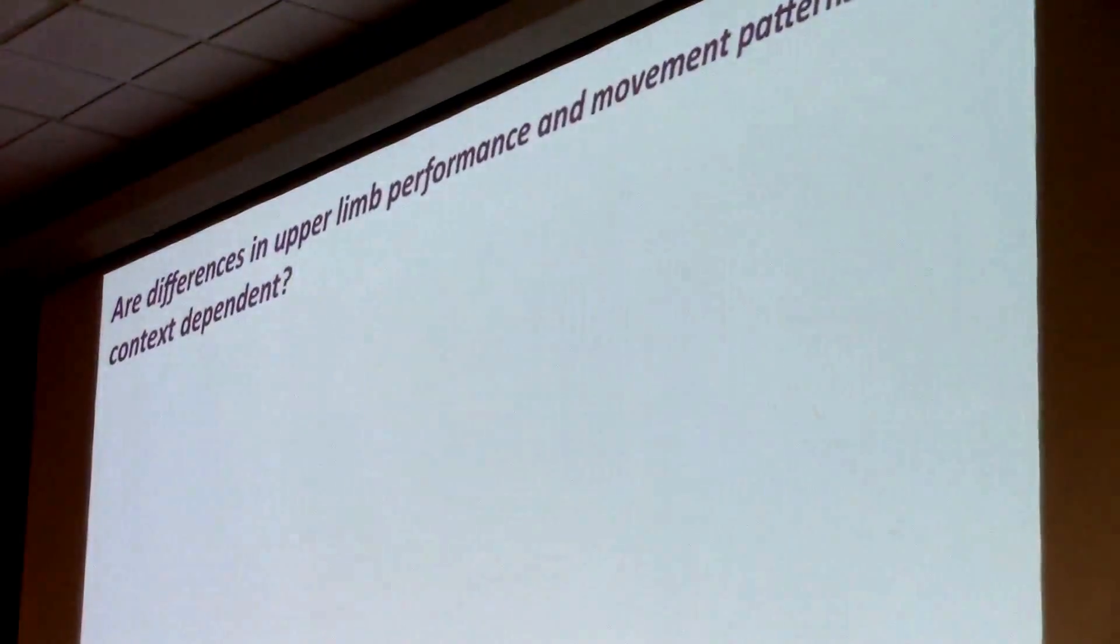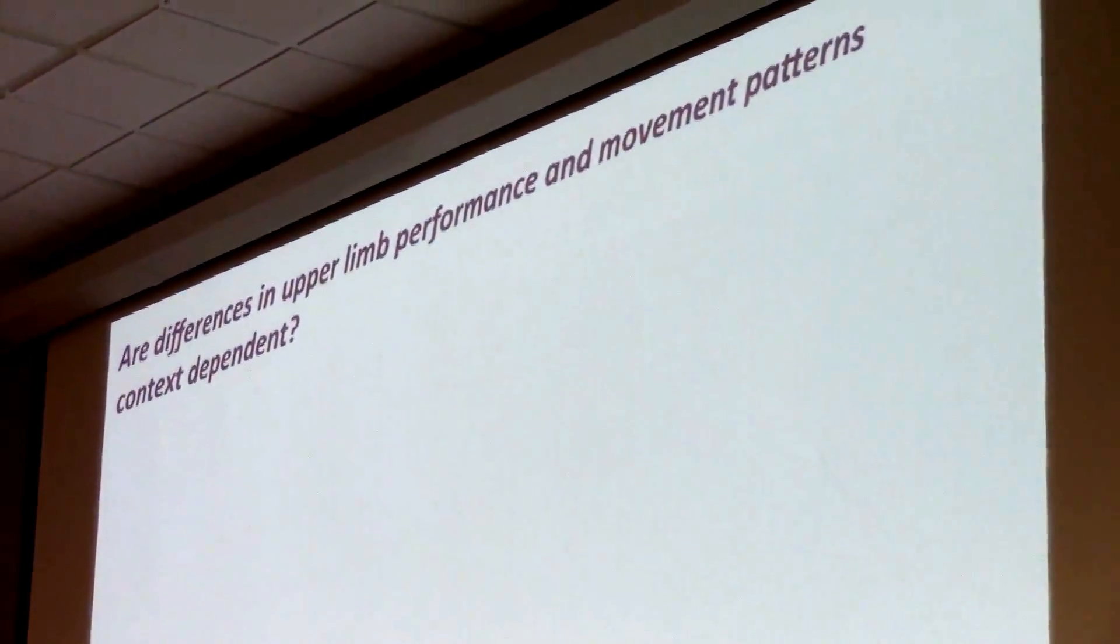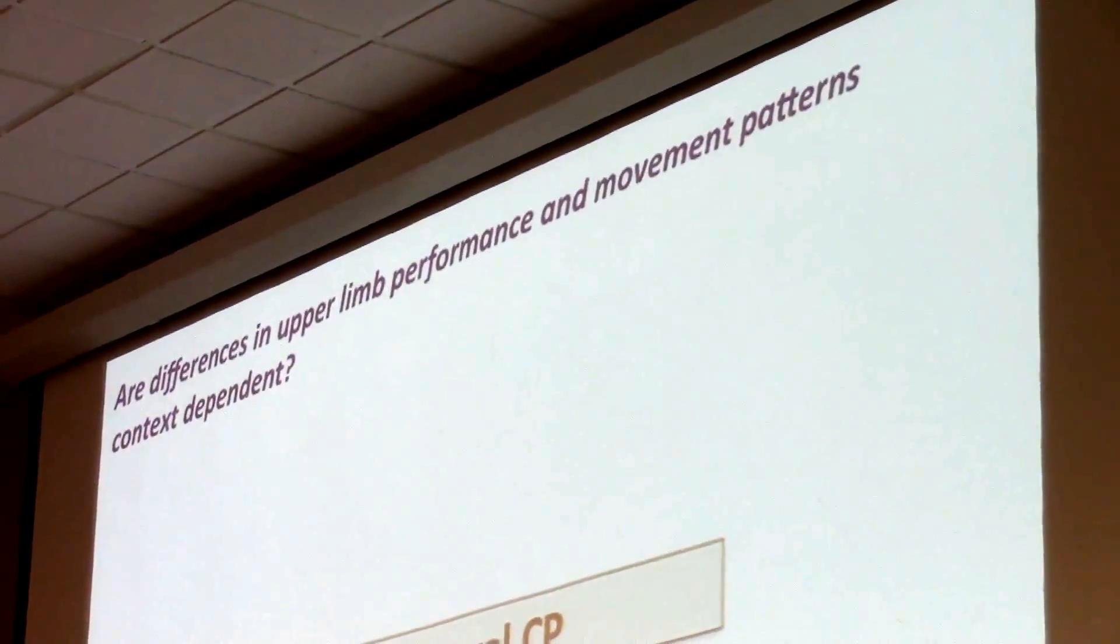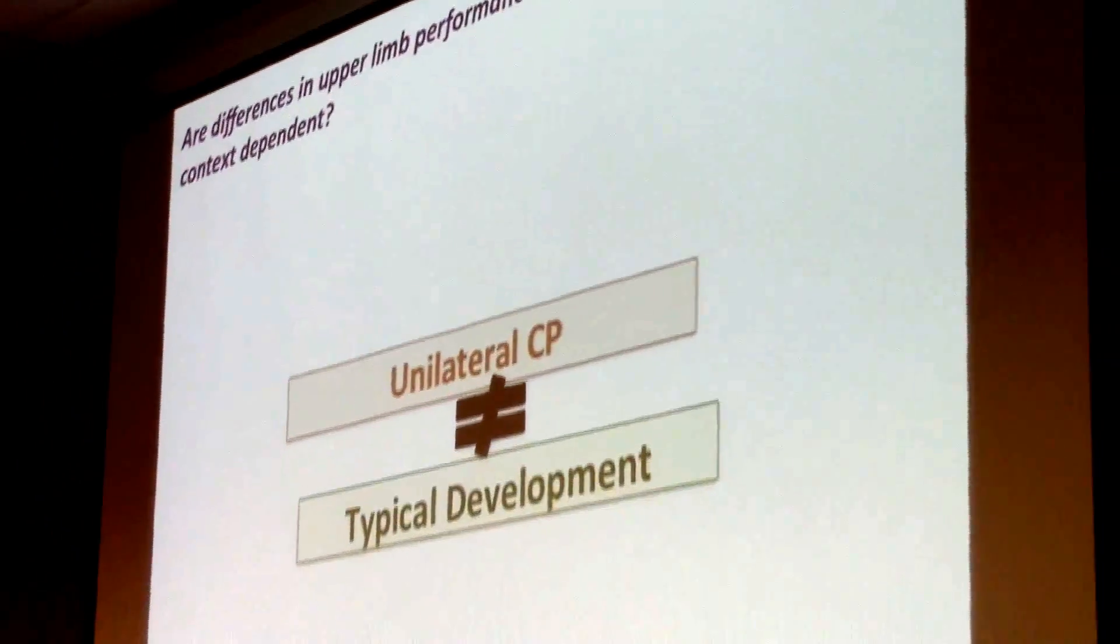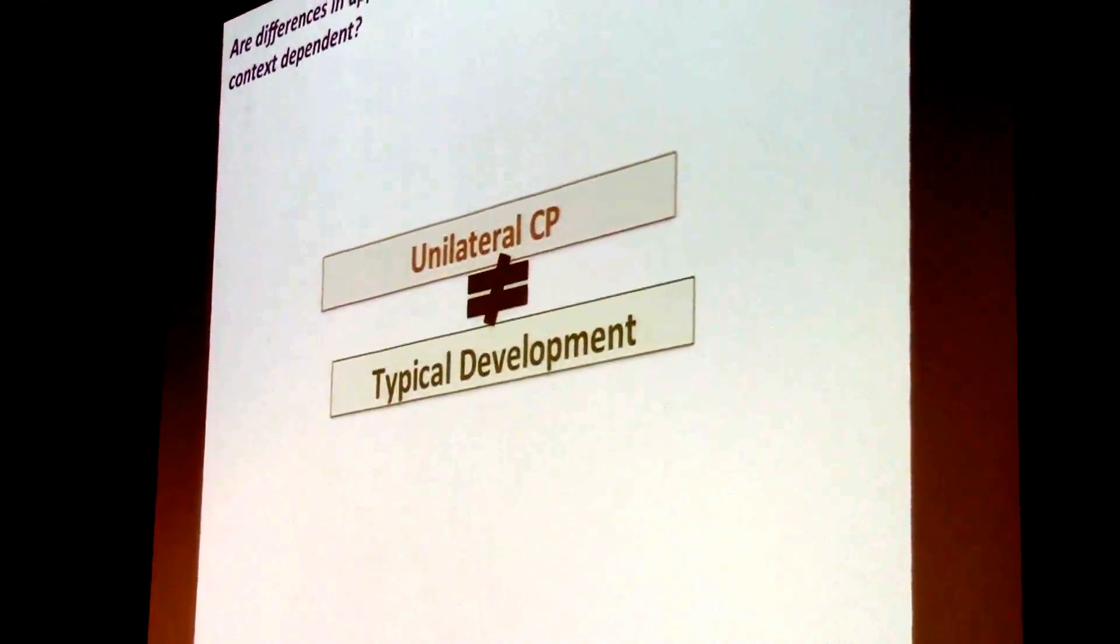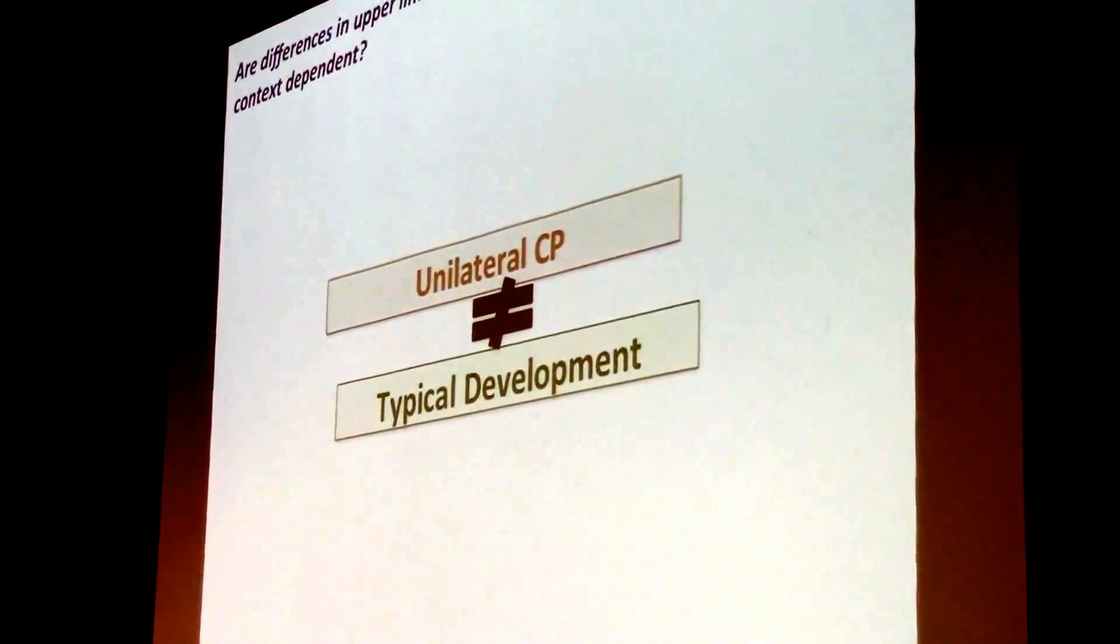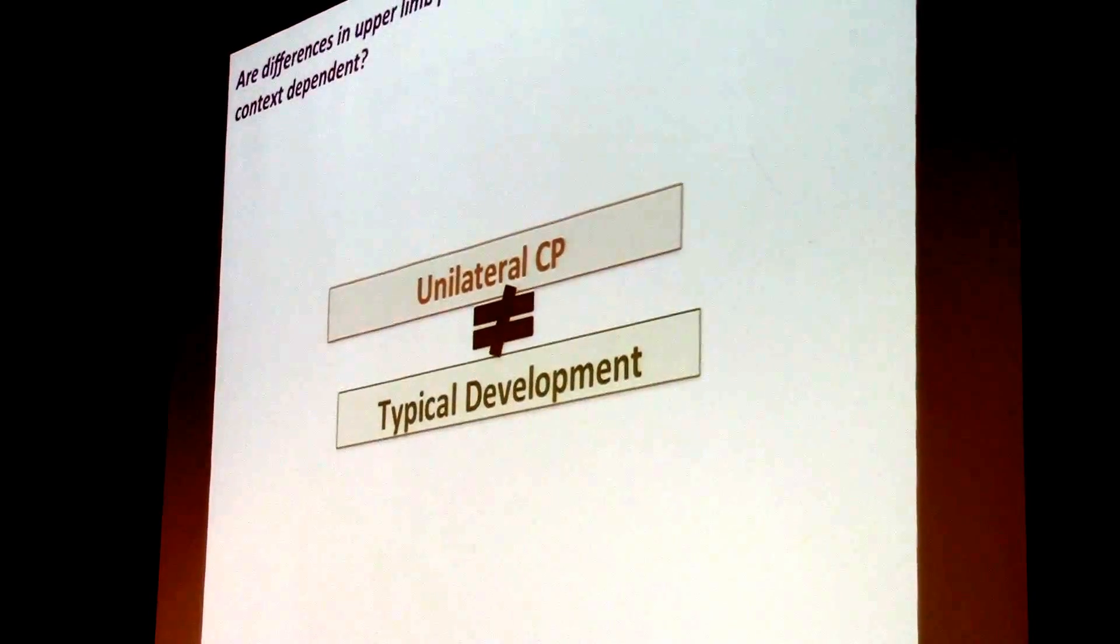These atypical patterns might reflect adaptive solutions to sustain satisfactory performance when their reduced capabilities affects compliance with test performance. So this experiment I'm going to present is getting into this particular issue. I'm trying to test, evaluate this explanation. We looked to see whether the differences typically seen between individuals with cerebral palsy and individuals with typical development are context-dependent.